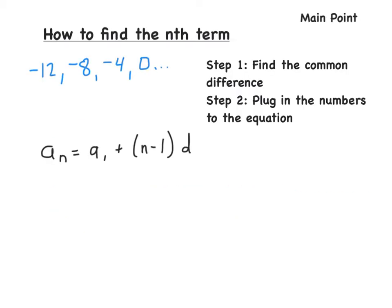Here are two steps for finding the nth term — write these down. Step 1: find the common difference. Step 2: plug in the numbers to the equation. So we have negative 12, negative 8, negative 4, 0. From negative 12 to negative 8, add 4; negative 8 to negative 4, add 4; negative 4 to 0, add 4. Our common difference is 4.